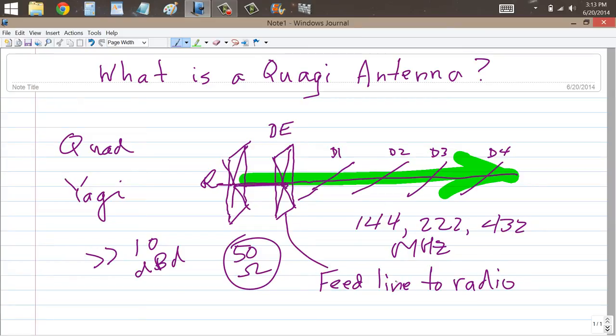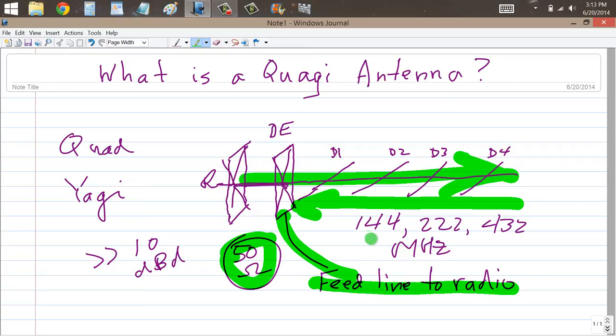Now when you feed this driven element at the bottom in the center, remember, full wavelength circumference, quarter wavelength on each edge of the square, in the center of the bottom edge, you feed that thing with 50 ohm coaxial cable, then you will end up with a horizontally polarized signal going out like that, and you'll receive signals best that are horizontally polarized, in the favored direction of this antenna, which in this diagram is off to the right.